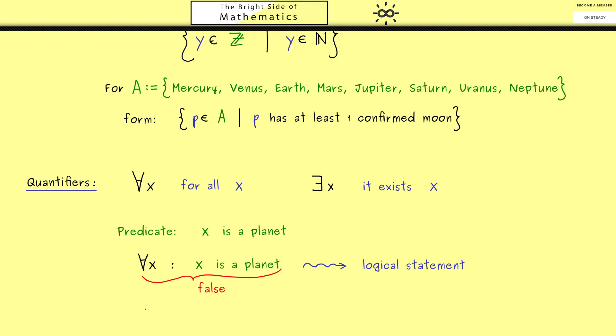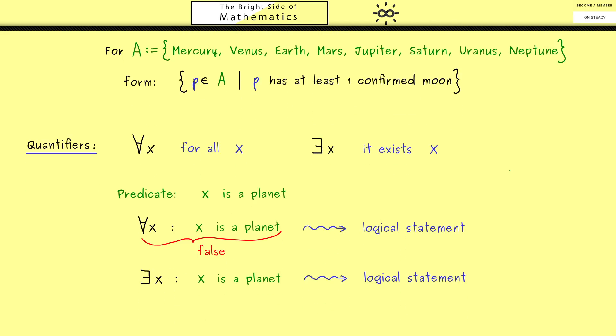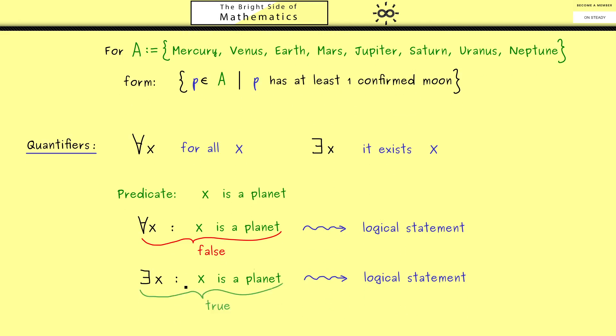In the same way, the combination with exists works: 'it exists x: x is a planet.' This means we have at least one object that satisfies the predicate. It's a logical statement that can be either true or false. Since we have 8 planets, this one is true. Always keep in mind the exists quantifier has an 'at least' inner meaning.